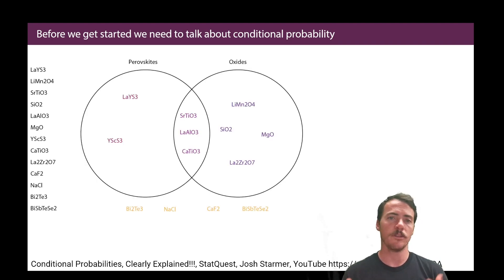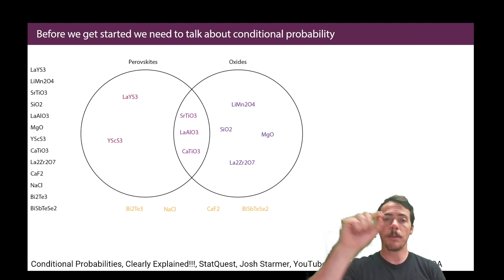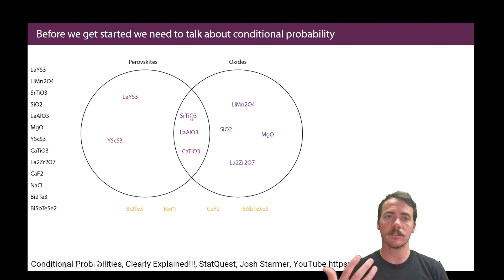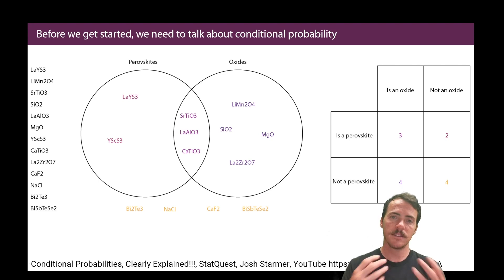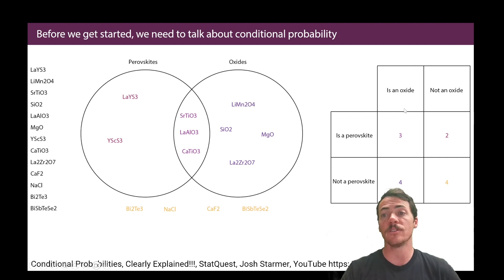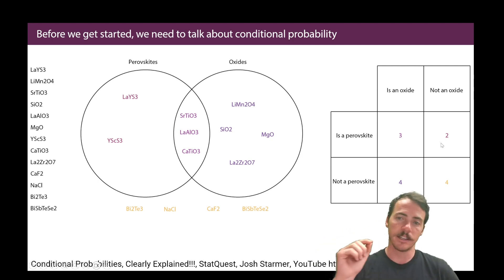I'm going to ask a couple of different questions. You're familiar with Venn diagrams. If we had a Venn diagram showing which materials are oxides, which are perovskites, and which are both or neither, we could populate it with all 13 materials. Here we see all our oxide materials, but some are also perovskites. Whereas these two are perovskites but not oxides, and these four down here are not oxides and not perovskites. We can rewrite that same information in a contingency table, where columns represent oxide/not-oxide and rows represent perovskite/not-perovskite, and each cell satisfies two criteria.